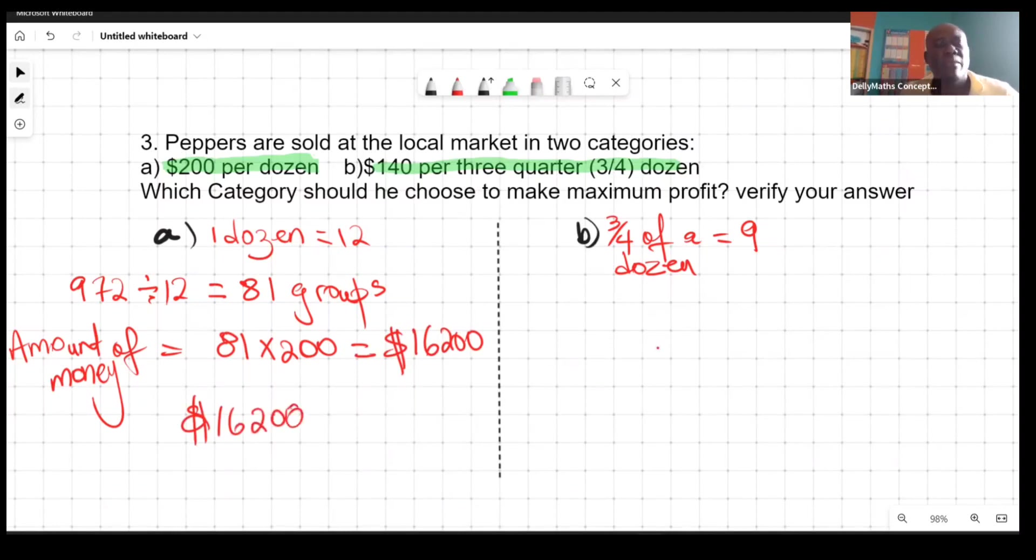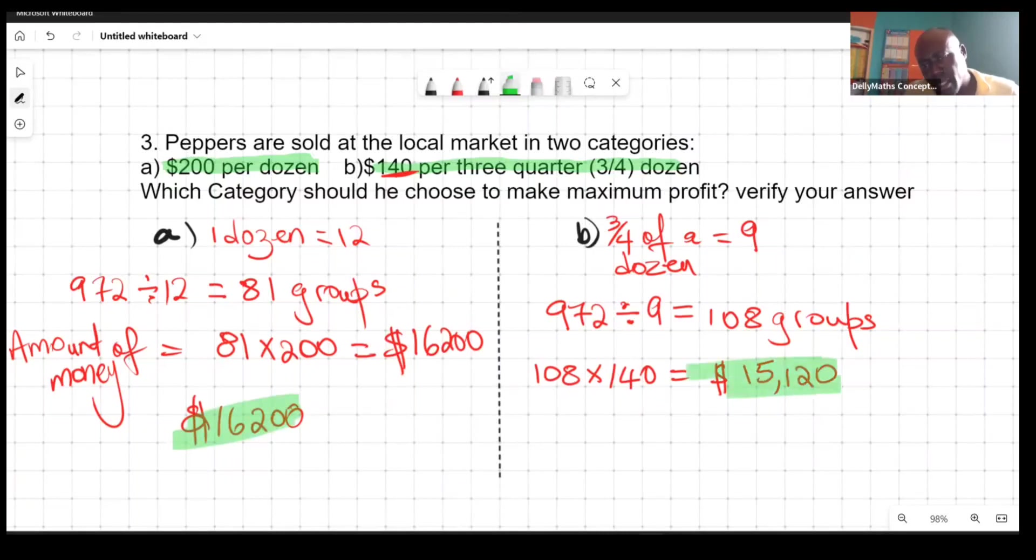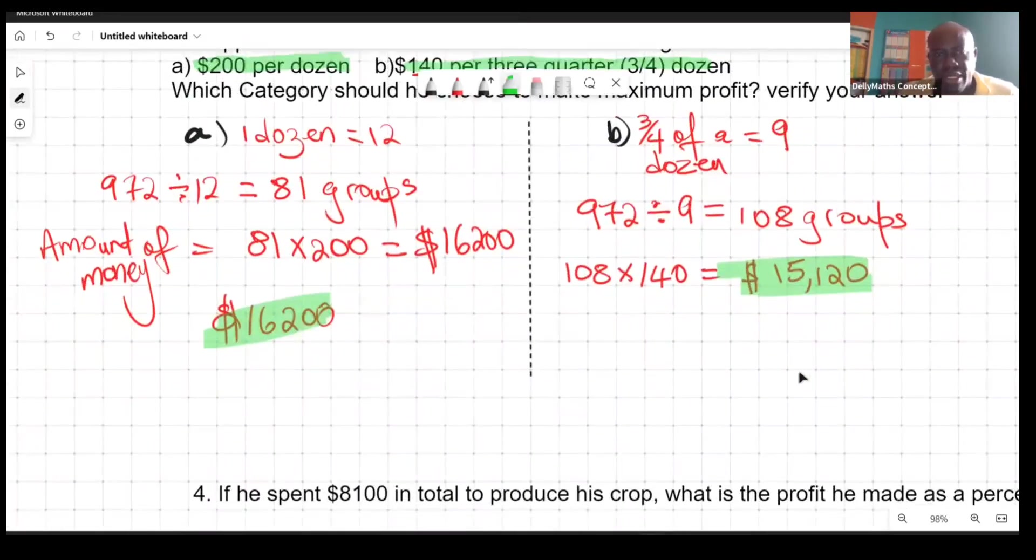In category A, if he's selling them in sets of 12, he's going to be making $16,200. For category B, we want to know how many sets of nines can you get from 972, so we divide by nine and we're getting 108 groups. It's $140 per group, so it's going to be 108 times 140. If he's selling them in sets of nines at $140, he's going to be making $15,120. When you observe this amount and this amount, it is better for him to choose category A.